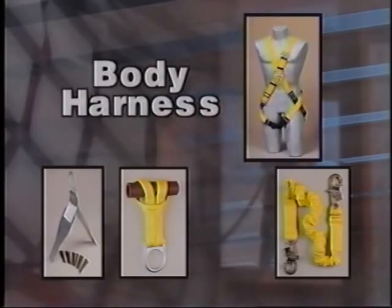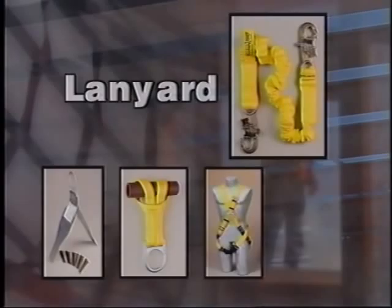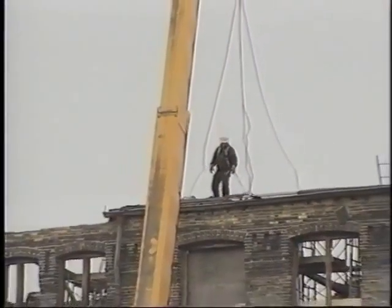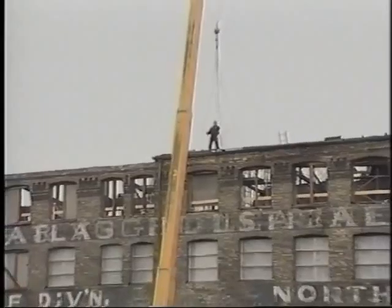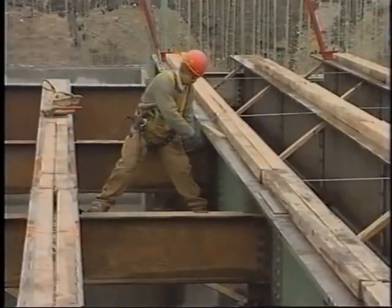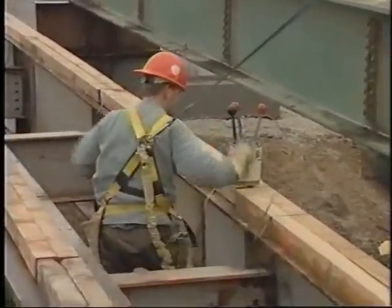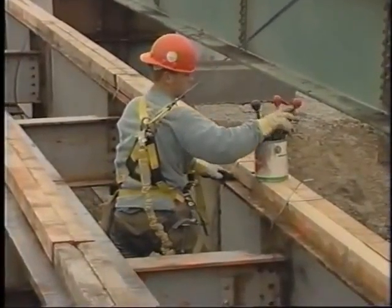A body harness, which distributes the fall arrest forces over other parts of the body such as the waist, pelvis, thighs, chest, and shoulders; and a lanyard, which connects the body harness to a deceleration device, an anchorage point, or a horizontal or vertical lifeline — the part of the system the employee ties off to. The personal fall arrest system must be rigged so a worker can't free fall more than six feet, can't come in contact with a lower level, and comes to a complete stop within three and a half feet after the deceleration device is deployed.